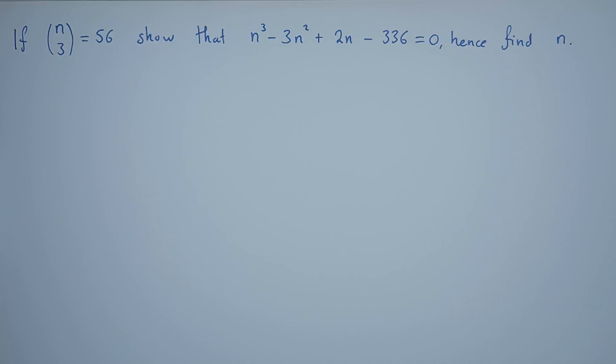Hi everyone, so we have this question under dynamic expansion which reads: if n choose 3 equals 56, show that n³ - 3n² + 2n - 336 = 0, hence find n.